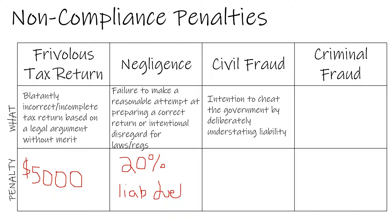A civil fraud is the intention to cheat the government by deliberately understating liability. Civil fraud is penalizable by 75% of the underpayment attributable to the fraud. Fraud includes the systematic omission of substantial amounts of income from the return or by the deduction of non-existent expenses or losses. This may be indicated by a taxpayer keeping two sets of books — one for tax purposes and one for true record keeping. In order to prove civil fraud, the IRS must present an overwhelming proof of fraud occurrence.